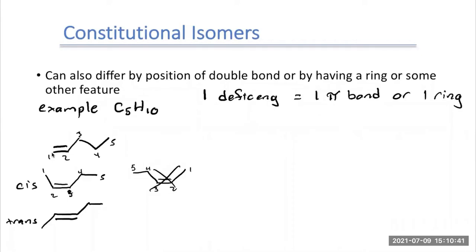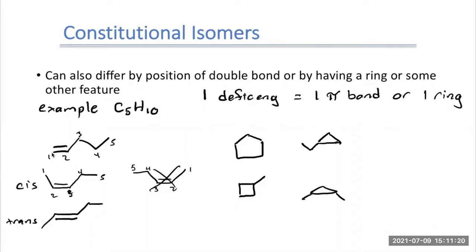Now let's start looking at rings. If I take C5H10 and draw it as a ring, I end up with cyclopentane. I can make that ring smaller — a four-membered ring. I can also make it a three-membered ring: cyclopropane, and then put a chain on it. Or instead of making a full chain, take cyclopropane and draw two methyl groups on it. So we ended up with seven possible structures, just as proposed.